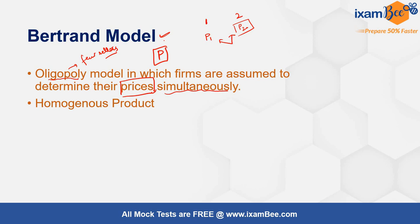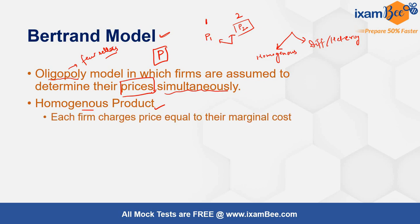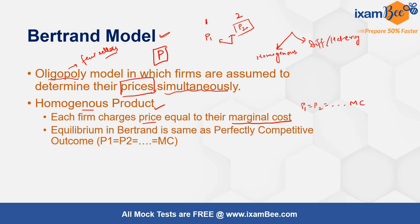In order to study the Bertrand model, we divide our study into two categories. First, we will study what happens when goods are homogeneous, and second, what happens when there are differentiated or heterogeneous products in the market. In case of a homogeneous product, each firm charges a price equal to their marginal cost, so P1 = P2 = MC. The equilibrium in Bertrand is the same as the perfectly competitive outcome.